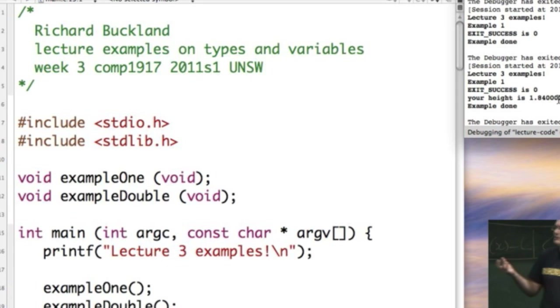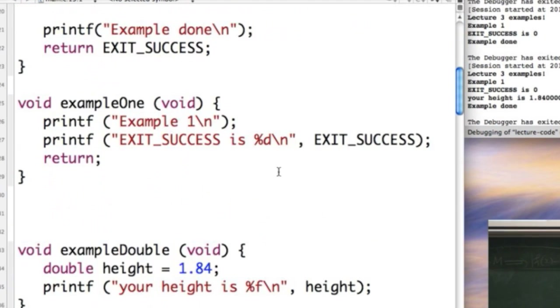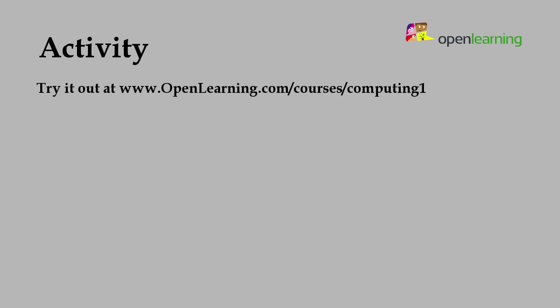Did you know what that many decimal places? Here's an exercise for you. Go on the interweb and work out how to format this to print out a different number of decimal places. They're called the format strings. So, just look up the format strings for printf and you'll see how to print out floating point numbers, double numbers, characters, hexadecimal numbers. Oh, I can show you hexadecimal numbers because they're fun.